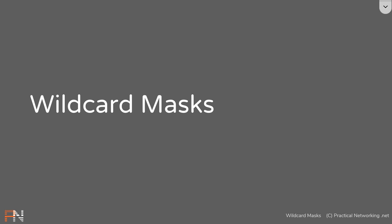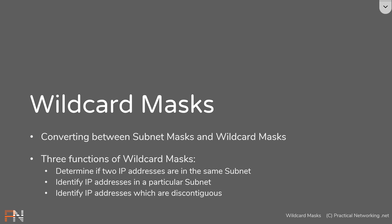That wraps up this lesson on wildcard masks. To summarize: we covered how to convert between subnet masks and wildcard masks, the three functions of wildcard masks — determining if two IP addresses are in the same subnet, identifying IP addresses in a particular subnet, and the unique third function of identifying discontiguous IP addresses. Those first two can also be done with regular subnet masks and CIDR notation, but discontiguous identification is unique to wildcard masks. I hope you enjoyed this video — please consider liking and subscribing, and I'll see you in the next one.